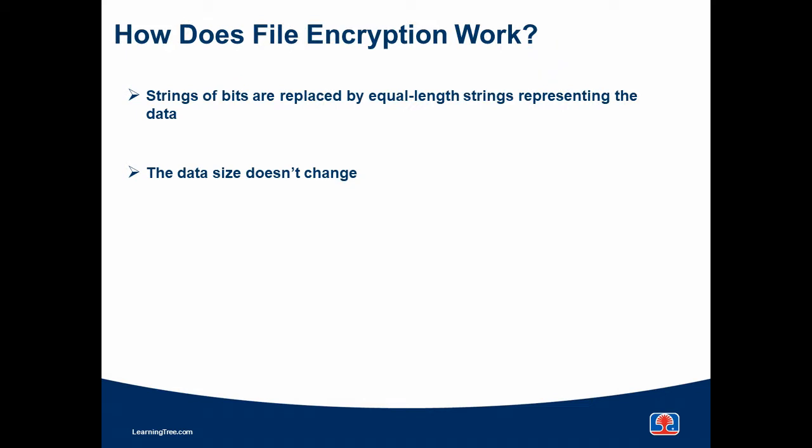We saw how compression works, now let's look at how encryption works. There are many different ways to encrypt and we can't go into the detail here. The basic concept is that strings of bits are replaced by equal-length strings representing the data. The data size doesn't change — the data itself does, to something that can be decrypted later on.